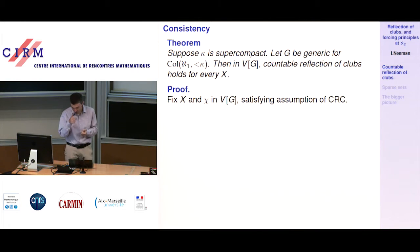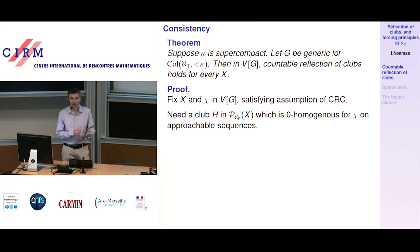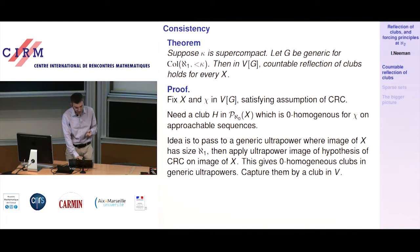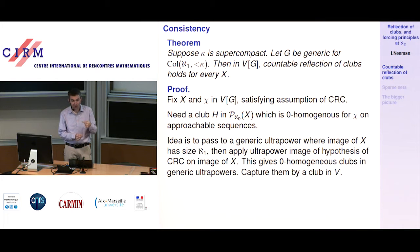I'm going to prove this. Fix X and fix the coloring chi. Suppose they satisfy the assumption of countable reflection of clubs — that means for a club of U of size aleph_1, you can find a club in U which is 0-homogeneous for chi on approachable sequences. What we need is a club H overall on X which is 0-homogeneous for chi on approachable sequences. The idea: pass to a generic ultrapower where the image of X has size aleph_1. Using a supercompactness measure on kappa and looking at the pointwise image of X, this will have size aleph_1 in the extension.